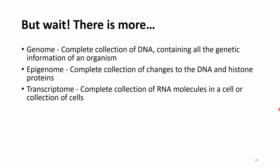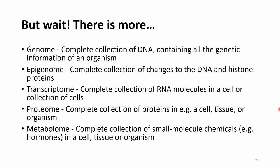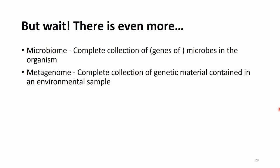There is also the proteome — the complete collection of proteins in a cell, tissue, or organism. The metabolome — the complete collection of small molecular chemicals, e.g. hormones, in a cell, tissue, or organism. The microbiome — complete collection of genes of microbes in the organism. And the metagenome — complete collection of genetic material contained in an environmental sample, for example dirt or water.